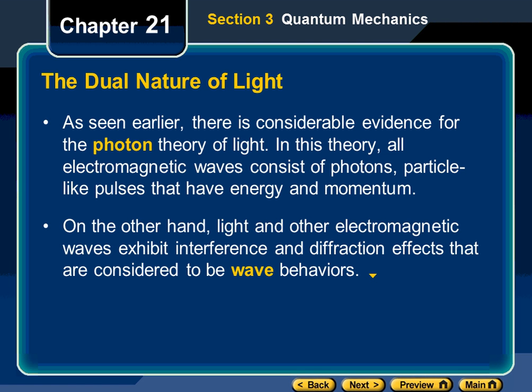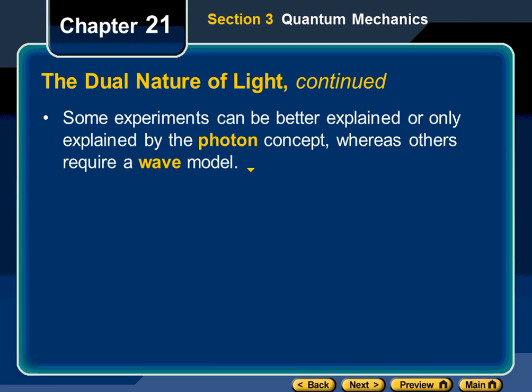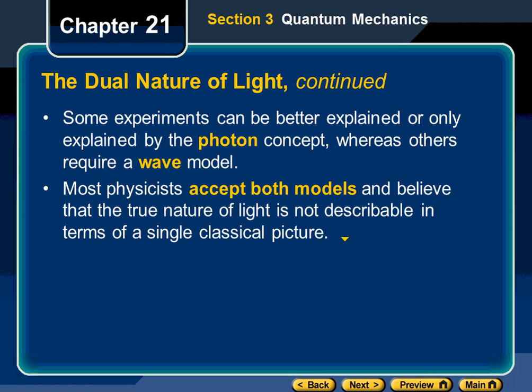Light has characteristics just like waves, but also characteristics just like particles — things that have momentum, mass, and velocity. So which model is correct? Both. It depends on what characteristic of light and what frequency of electromagnetic waves we're referring to. Some experiments can only be explained by the photon concept; others require the wave model. We accept both models.